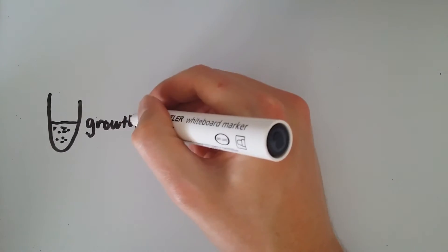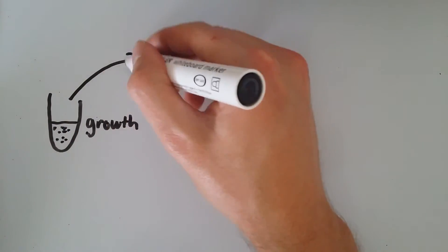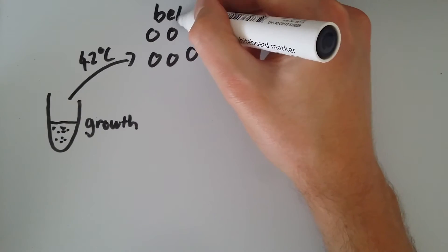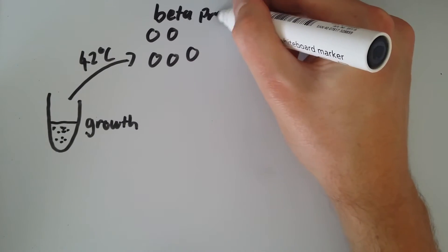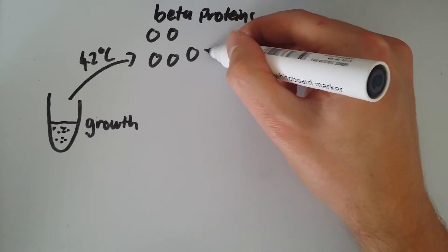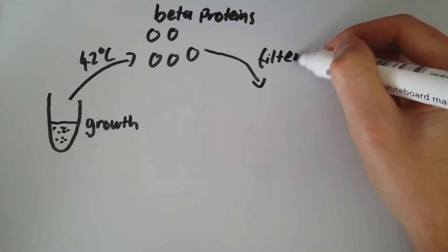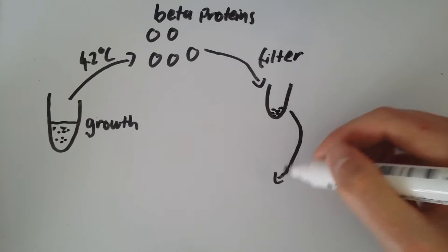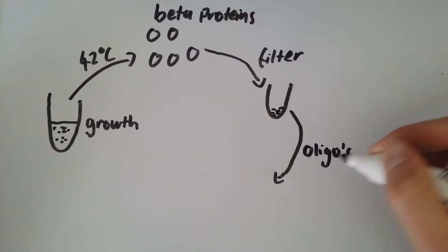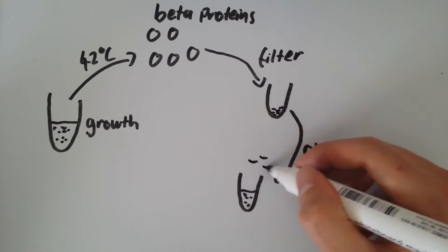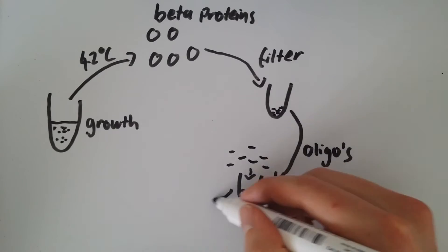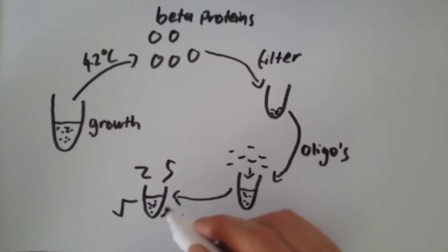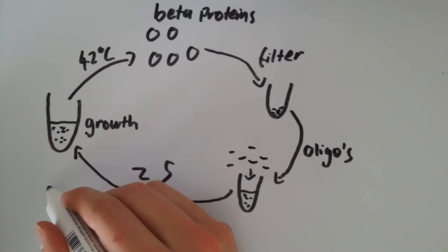Firstly, it monitors cell growth until the cell population is big enough. Then beta protein expression is induced. Cells are then moved to a filter to remove the growth medium and ions, which may interfere with electroporation. A water solution containing the oligos is added to the cells before the cells are moved to the electroporation area. Cells are then placed back into growth medium for recovery, and their growth monitored before the process starts again.